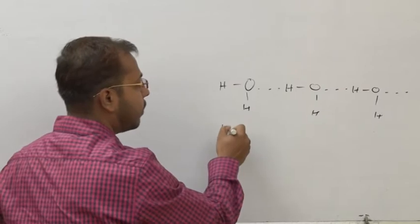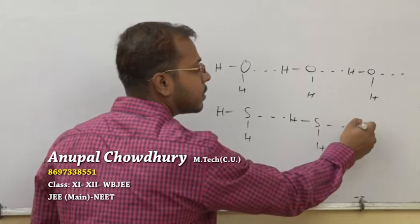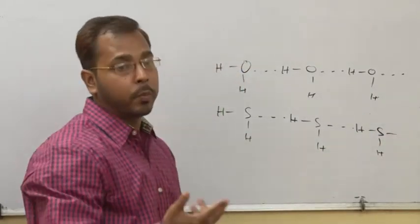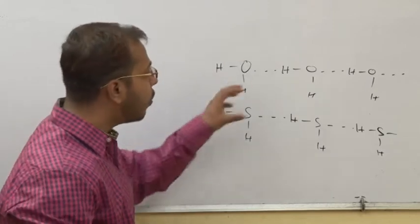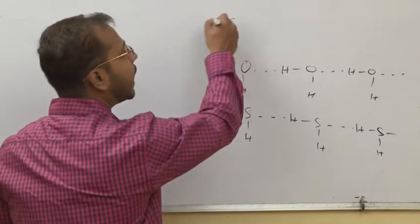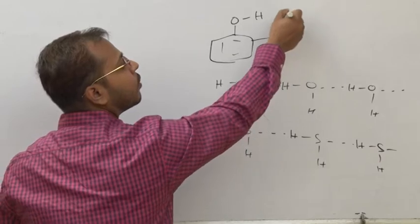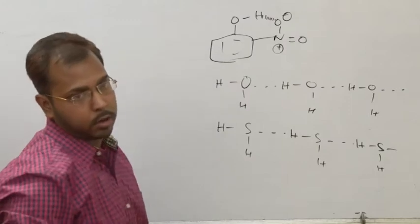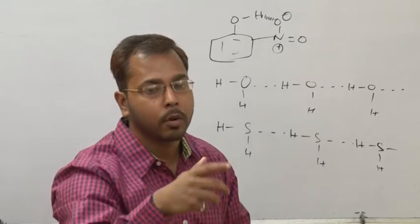This type of hydrogen bonding can also form in the case of H₂S. Hydrogen bonding can be classified into two parts: intramolecular and intermolecular. Here the hydrogen bonding is intermolecular because one atom is attached with another atom. But in the case of ortho-nitrophenol, the hydrogen bonding is intramolecular because the bond occurs within one molecule.